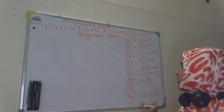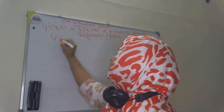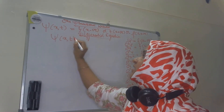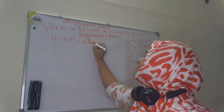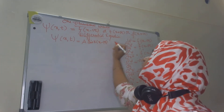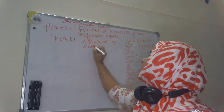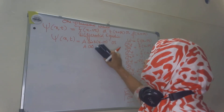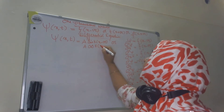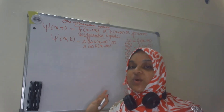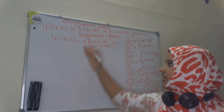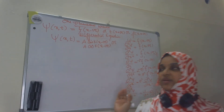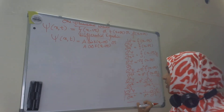The solution of this second-order differential equation can be written as psi(x, t) = A sin(k(x − vt)) or A cos(k(x − vt)). Or we can take it as A e^(ik(x − vt)). These represent the solutions for this second-order differential equation, which is the differential equation for a one-dimensional wave.